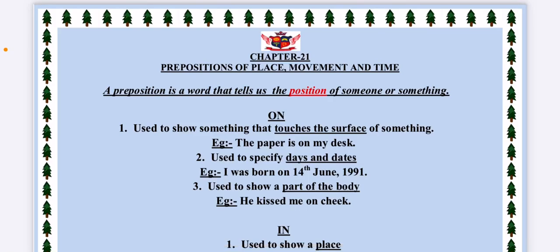Good morning students, so our last chapter of grammar is Chapter Number 21: Prepositions of Place, Movement and Time. Now, what is a preposition? It can be derived from the name itself. Preposition means something which tells the position of someone or something. So a preposition is a word that shows the position or the location of someone or something.